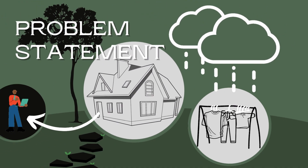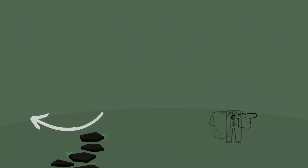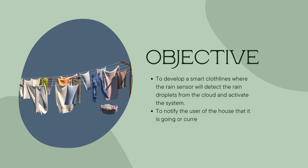So how can we let them know it is raining before they have to wash all of their clothes all over again? The objectives are to develop a smart clothesline where the rain sensor will detect the rain droplets and activate the system, and to notify the user of the house that it is currently raining outside.